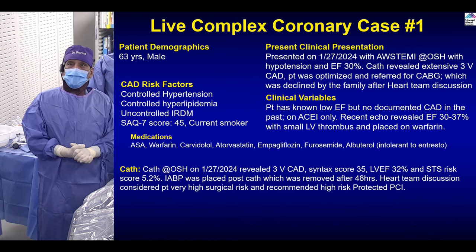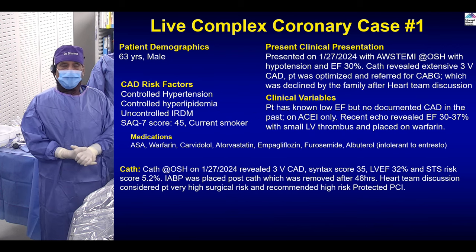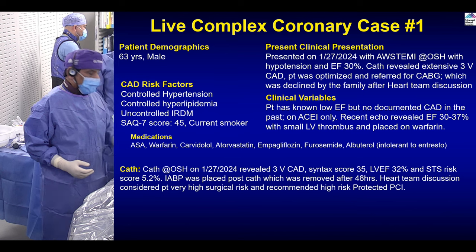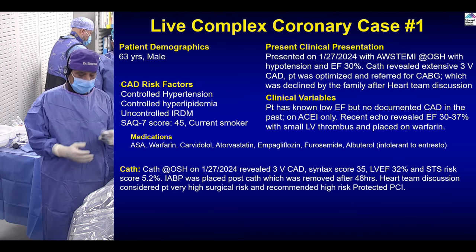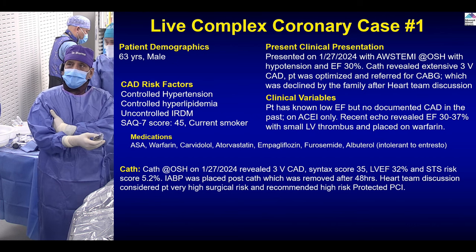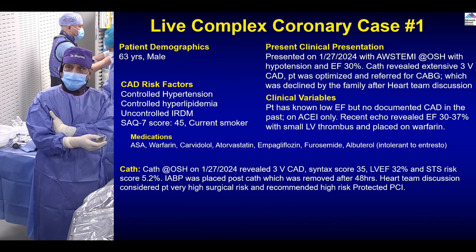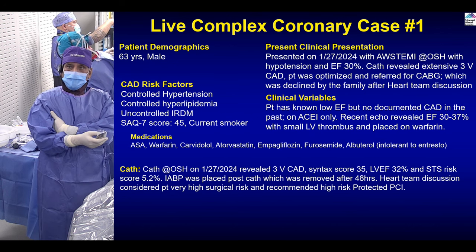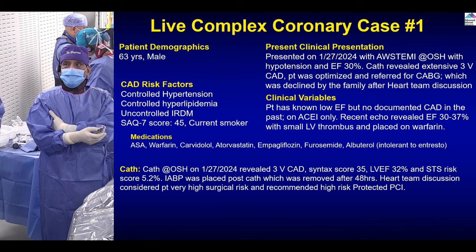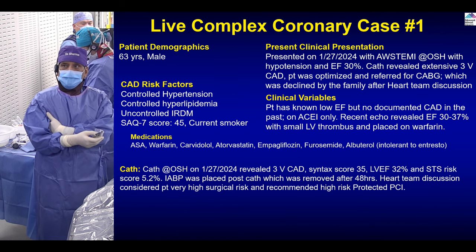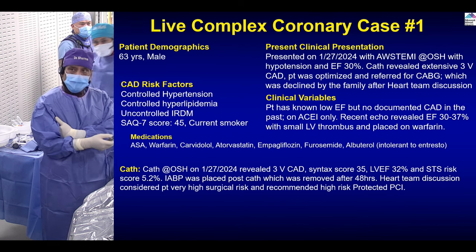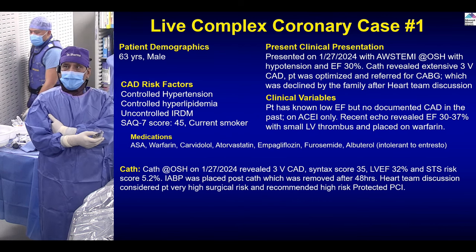Please join because in the next 45 minutes we'll show this case and then continue our presentation. Greg Stone's presentation is next. The book of lecture is really tremendous for understanding the hemodynamics. So with that note, this is the case: a 63-year-old male who presented in end of January with anterior wall STEMI at an outside hospital, hypotension, EF of 30%. Cath revealed three-vessel disease and patient had a balloon pump done, was optimized, and referred for CABG.